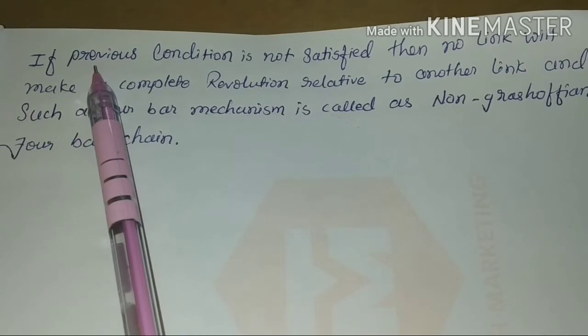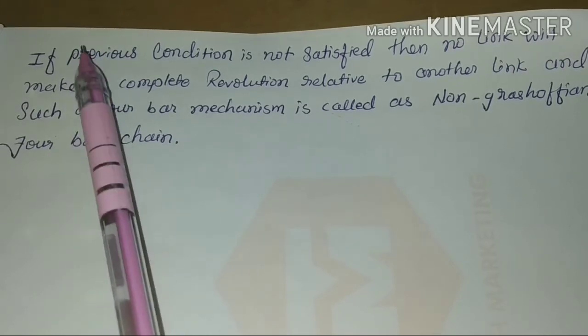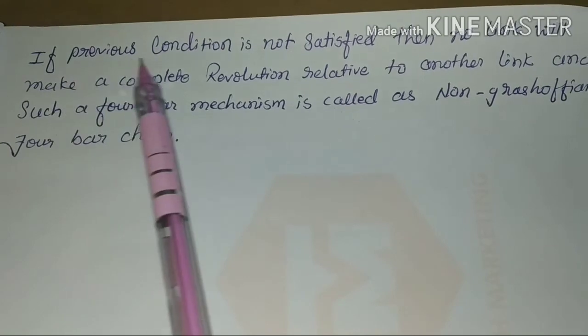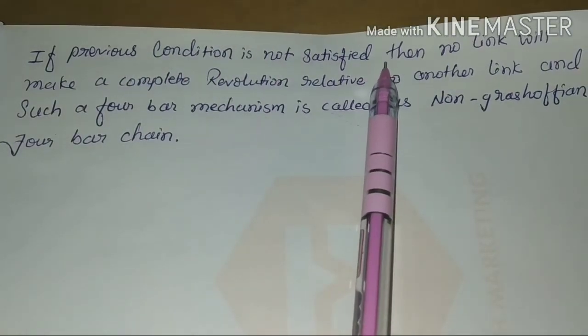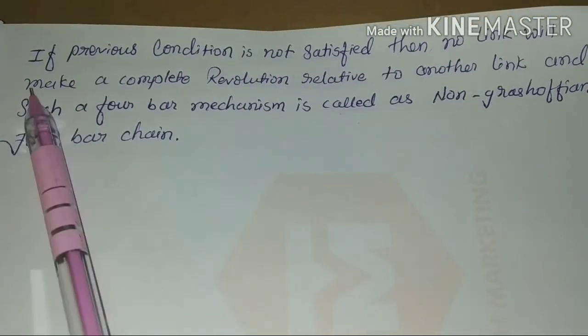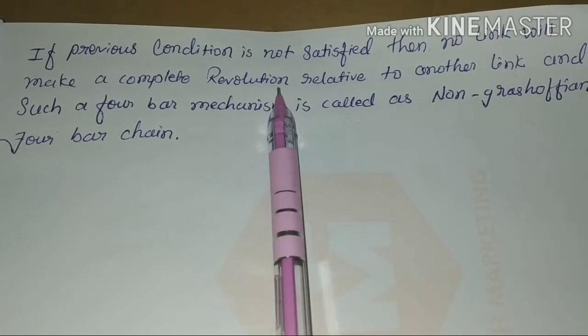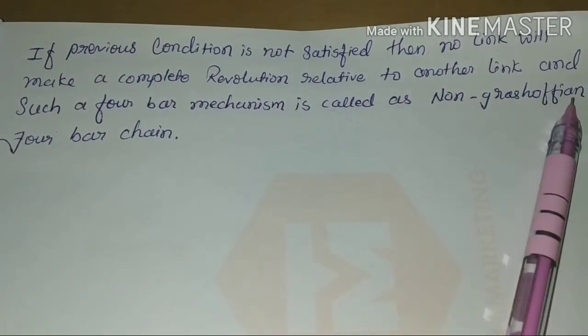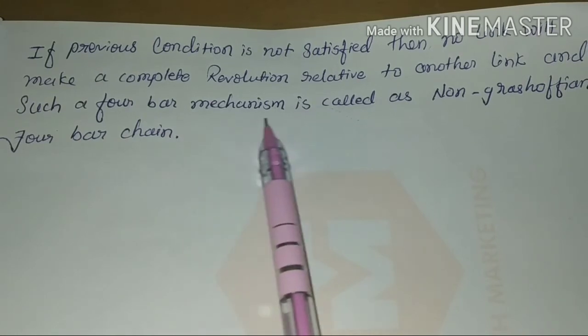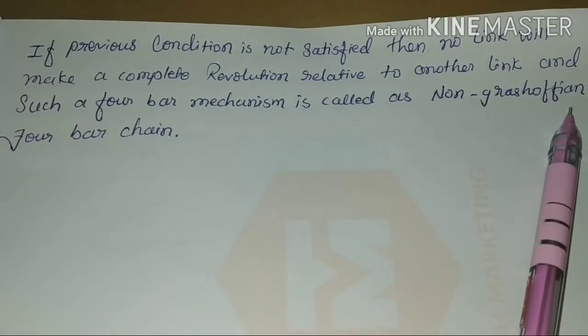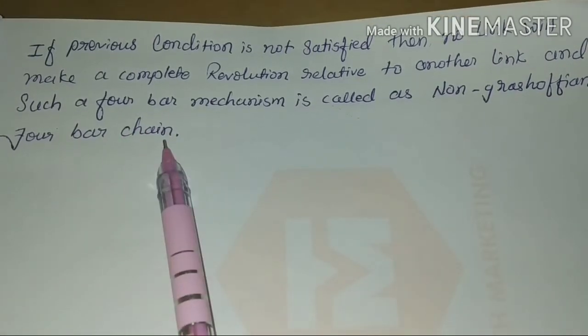If the previous condition is not satisfied, then no link will make a complete revolution relative to another link, and such a four-bar mechanism is called a non-Grashovian four-bar chain.